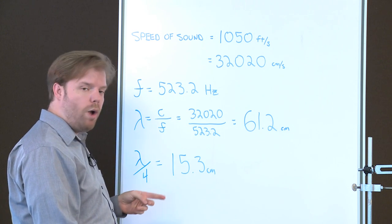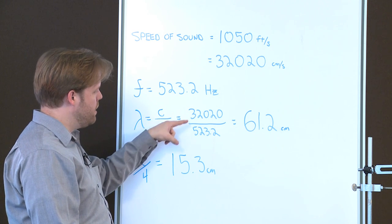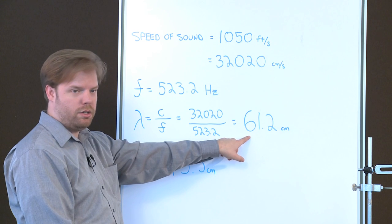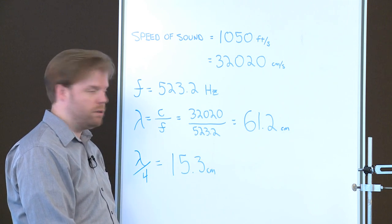To figure out the wavelength of that frequency we take the speed of sound, divide it by the frequency, and we end up with 61.2 centimeters. That's the wavelength of 523.2 hertz.